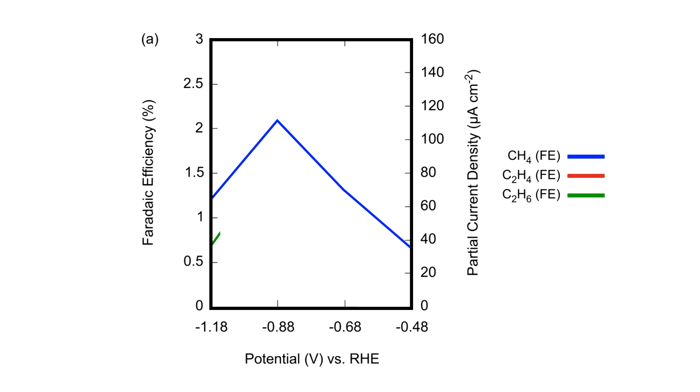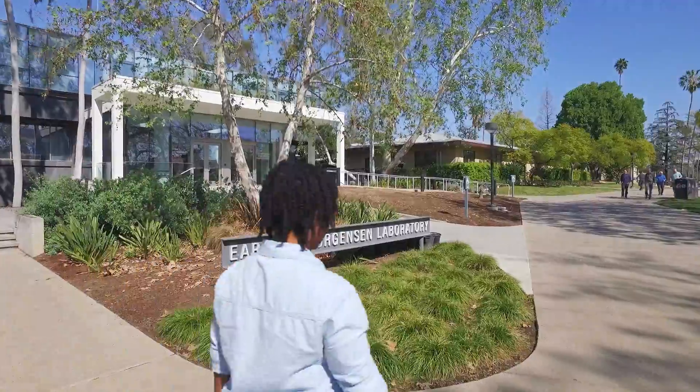We saw methane, ethylene and ethane being formed. This is similar to what plants do except they make glucose for food. We can, in principle, use our catalyst to make useful fuels.